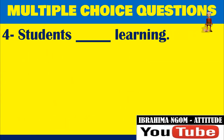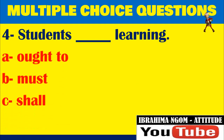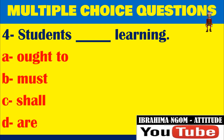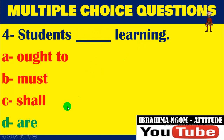Number four: 'Students _____.' A) ought to learning, B) must learning, C) shall learning, D) are learning. Modals are never followed by an -ing form — remember characteristic number six: modals are always followed by the base form. Since none of the modal options use a base form, the correct answer here is D — 'are learning' — present continuous.